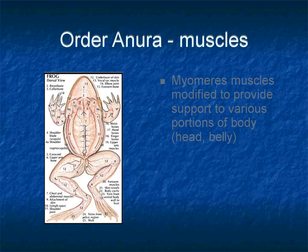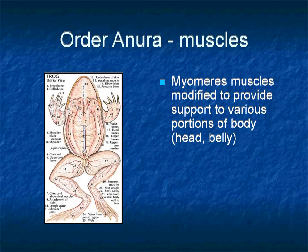In fish, myomeres were organized segmentally in the trunk to provide the power of locomotion. But during amphibian evolution, these myomeres or myotomes were modified to support various portions of the body — including the head and belly — instead of helping in locomotion as they did in fishes, as seen in salamanders and caecilians.